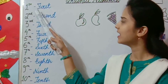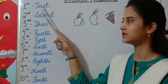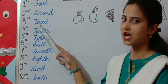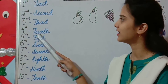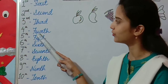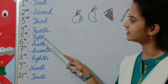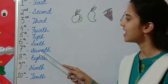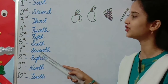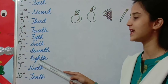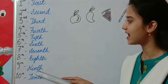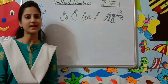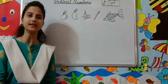Look here everyone. F-I-R-S-T, 1st. S-E-C-O-N-D, 2nd. T-H-I-R-D, 3rd. F-O-U-R-T-H, 4th. F-I-F-T-H, 5th. S-I-X-T-H, 6th. S-E-V-E-N-T-H, 7th. E-I-G-H-T-H, 8th. N-I-N-T-H, 9th. T-E-N-T-H, 10th. Ordinal Numbers tell us about the position.